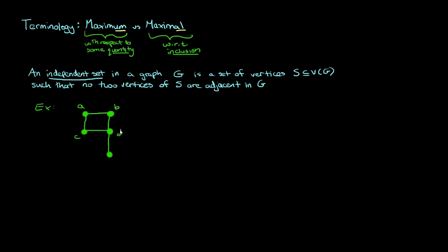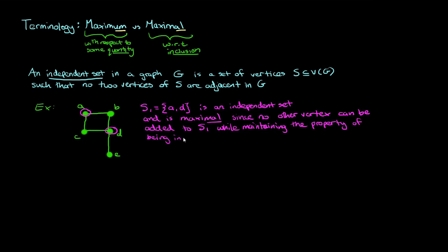Consider the set S1, the vertex A and the vertex D. This is an independent set, and it's also maximal because no other vertex can be added to S1 while maintaining the property of being an independent set.